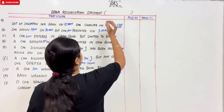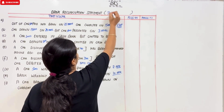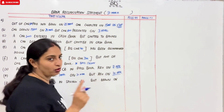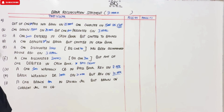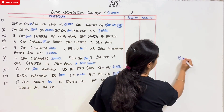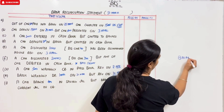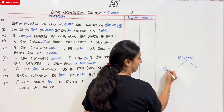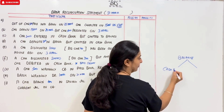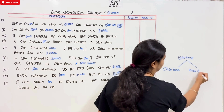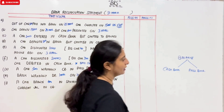We have given the question date as 31st March. So you have to write 31st March first. Then check which balance has been given. You have to make it on a chart. You have to check whether the cash book balance or the passbook balance is given.